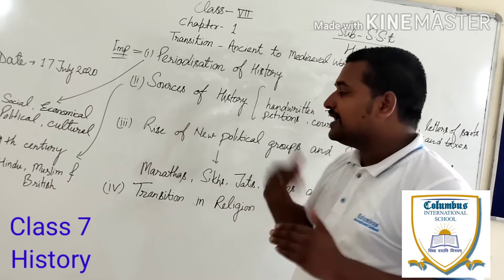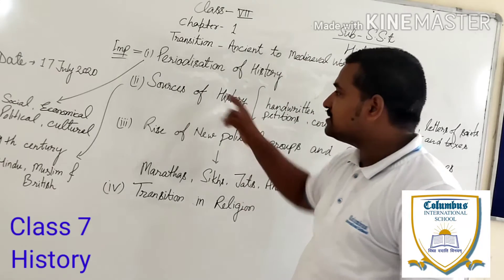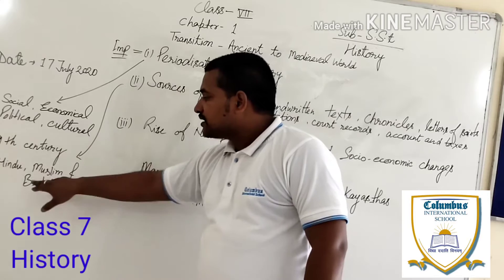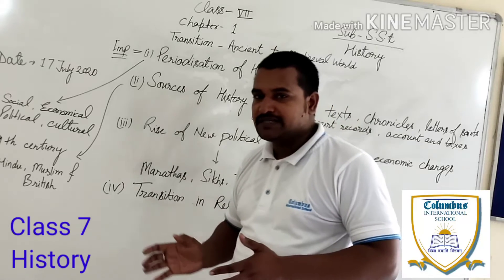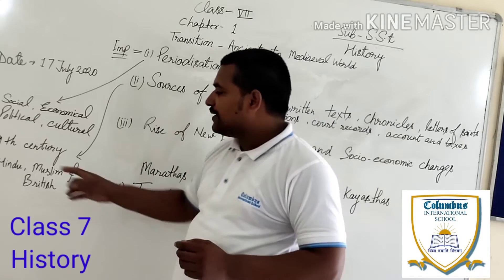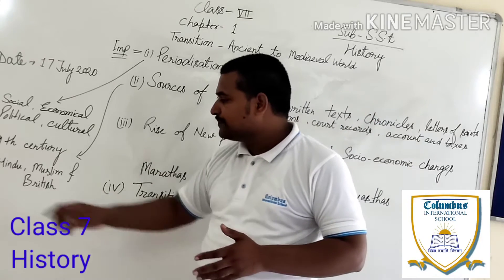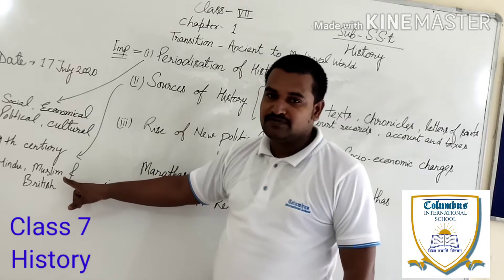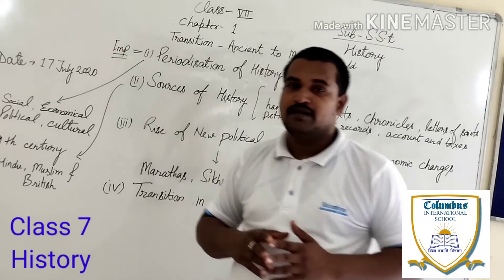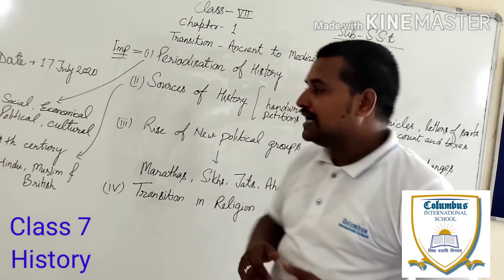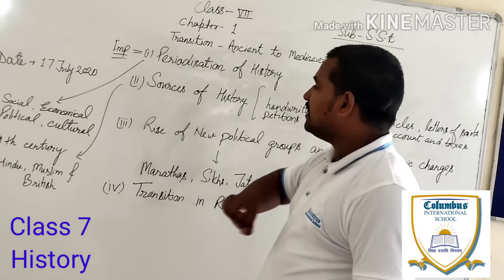In the coming years, periodization was changed by the British rulers and British writers, and that changed to Hindu, Hindu-Muslim, and Britishers. That means when the British were ruling India, eras were known as Hindu, Muslim, or British. Those belonging to Hindu society were known as Hindu, those to Muslim society as Muslim, and those who came to India for trade and started living here were known as Britishers.